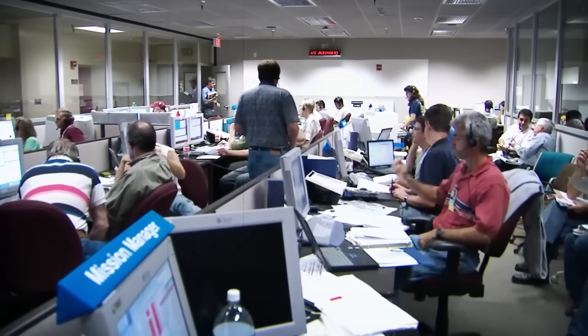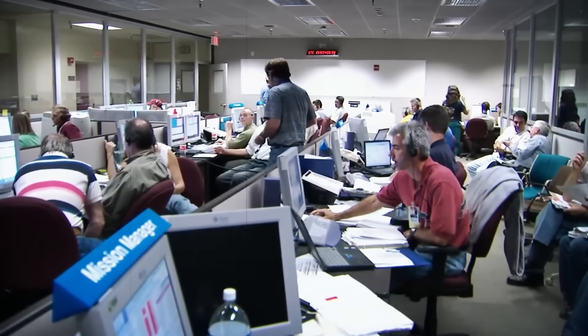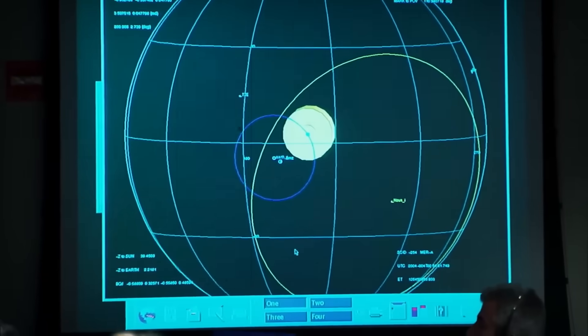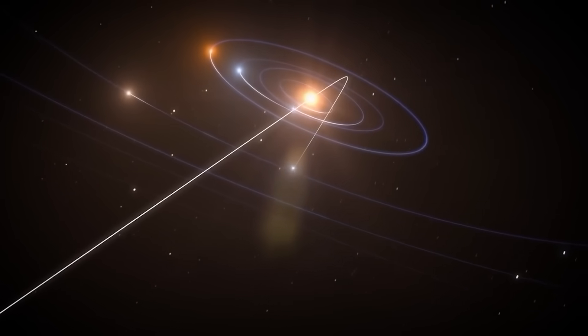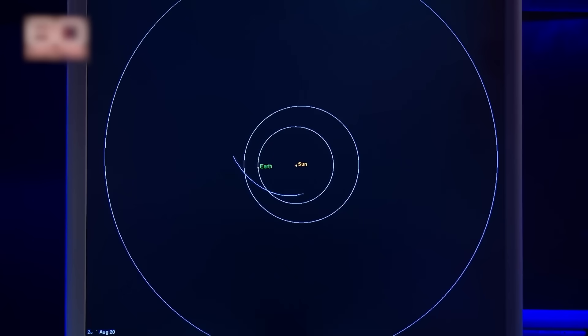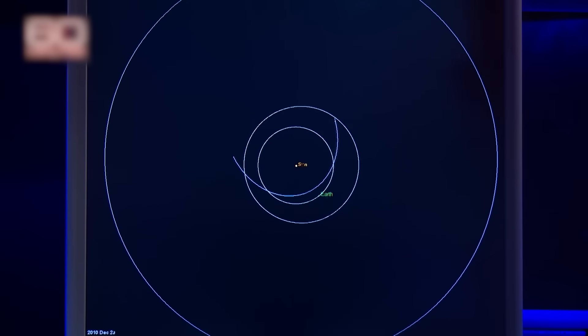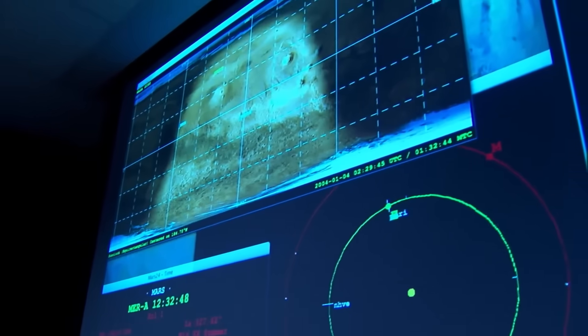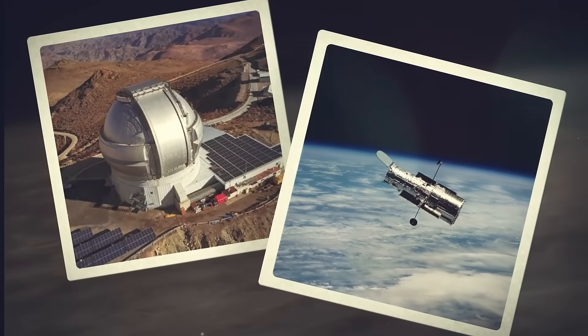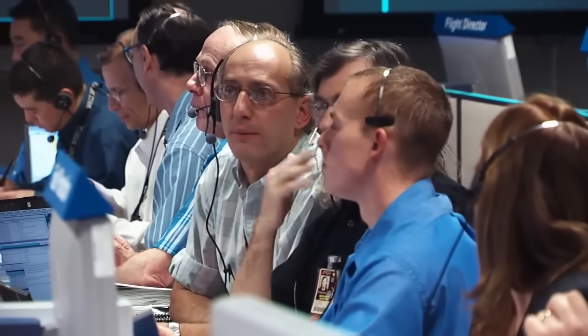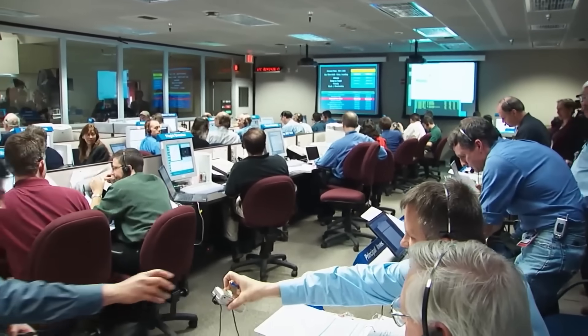But not all things are what they seem. Right away, this object was different. Its path through our solar system was unusually fast and straight, a trajectory so extreme it shattered records. But the real shock came when the big telescopes, like Hubble and Gemini South, turned their powerful eyes toward it. What they saw sent a ripple of disbelief through the entire scientific community.